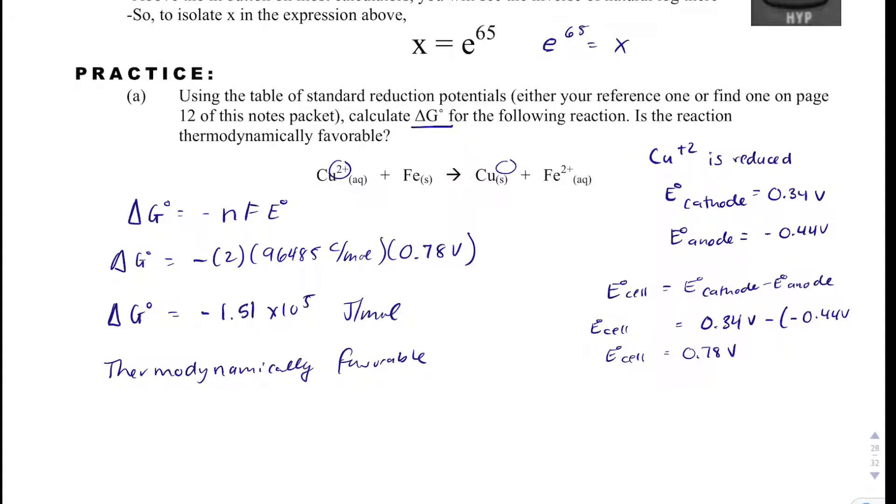A couple reasons for that. We have a positive voltage and a negative delta G, which those should always happen. You could use either of those to justify your answer.